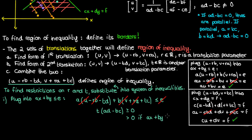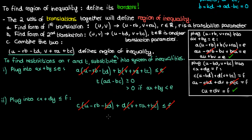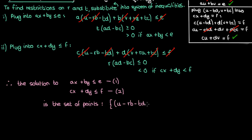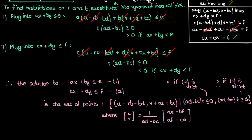If the first inequality happened to be a strict inequality, then this restriction on t would just be strictly greater than zero. Similarly, substituting into the second inequality gives r times (ad minus bc) is less than or equal to zero as the restriction on r. If the second inequality is strict, then the restriction on r is just less than. So our solution to the system of intersecting inequalities is the set of points u minus r·b minus t·d comma v plus r·a plus t·c, with these conditions on r and t, where u comma v is the point of intersection.